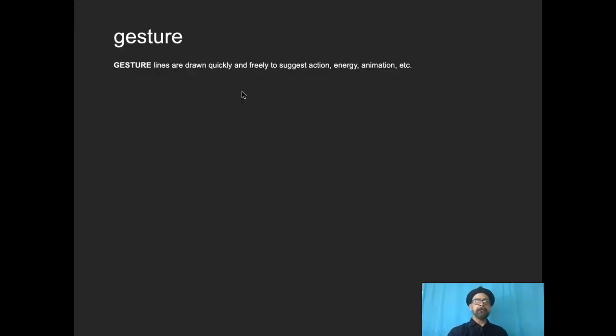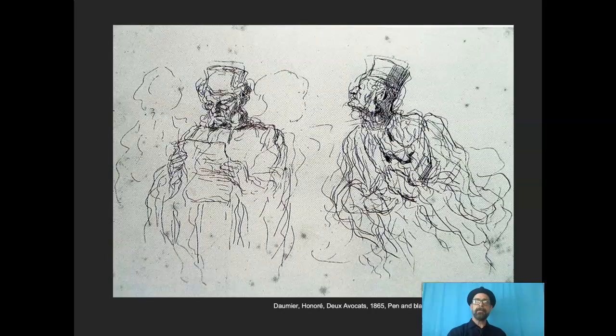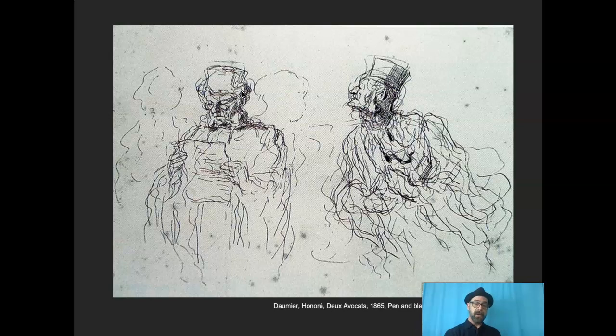So gesture lines, quickly drawn, they suggest action and energy and animation. This Daumier piece, I can't think of anything more boring than two old guys reading, but the way that he draws it is so exciting. That gesture, it's a record of the motion of his body. And that imbues even a less than thrilling subject with energy and excitement. Motion is so important. Line is a great way to create motion.